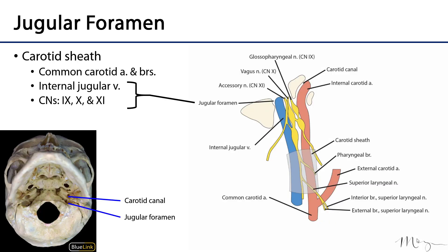Our story begins at the jugular foramen, through which several key anatomical features are transported out of the skull. The jugular foramen is a window between the occipital bone and the temporal bone, through which the internal jugular vein, cranial nerve 9 (the glossopharyngeal nerve), cranial nerve 10 (the vagus nerve), and cranial nerve 11 (the accessory nerve) are all transmitted out of the neurocranium.